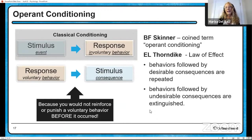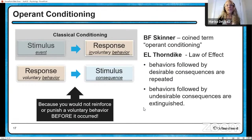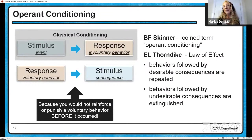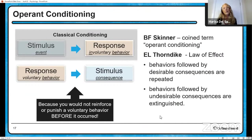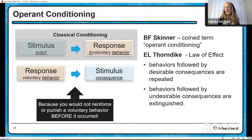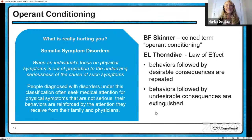Where did this all come from? B.F. Skinner coined the term operant conditioning. He had a Skinner box, put animals in there, and looked at what they would do and what kinds of rewards and punishments would affect their behaviors. Thorndike came up with something called the law of effect — behaviors followed by desirable consequences are repeated, and behaviors followed by undesirable consequences are extinguished. It's a really important concept in operant conditioning.